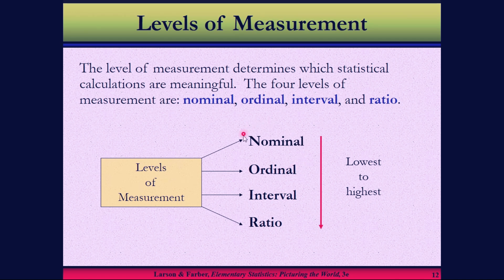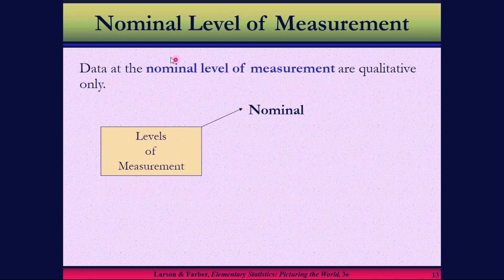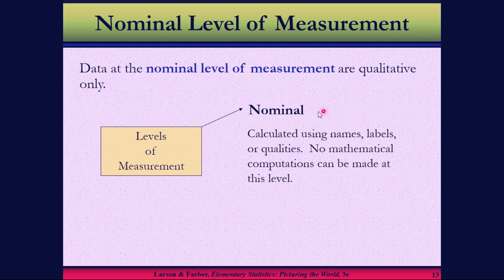The first type is nominal level of measurement. Data at the nominal level of measurement are qualitative only. The nominal level classifies categories. It's calculated using name labels or qualities. No mathematical computation can be made at this level.